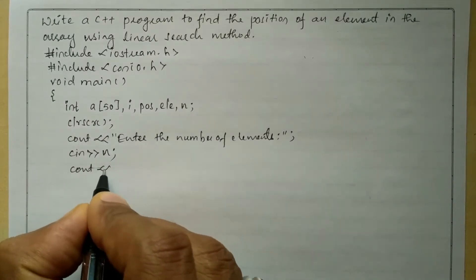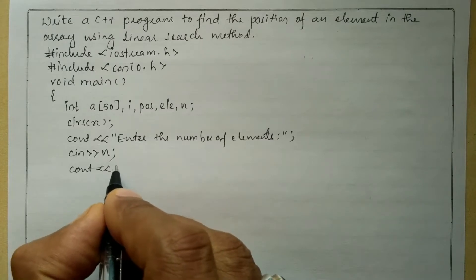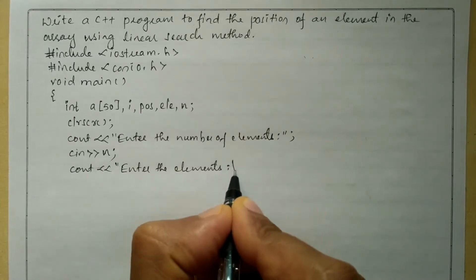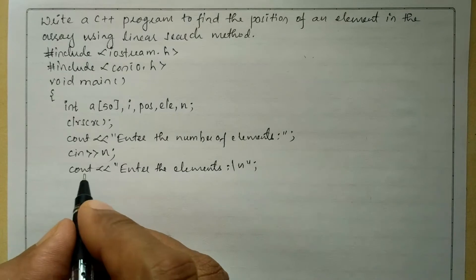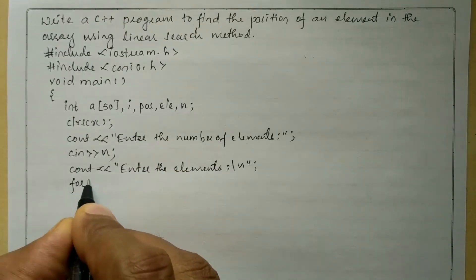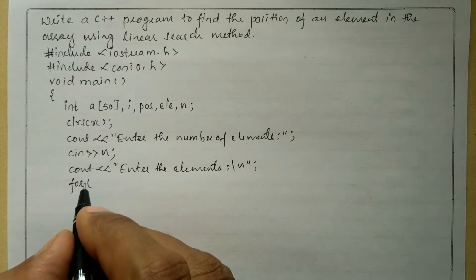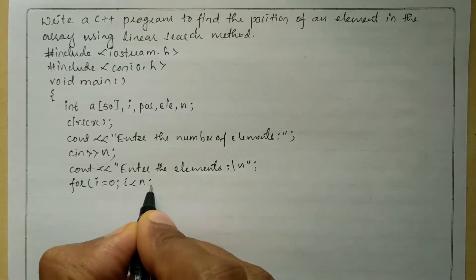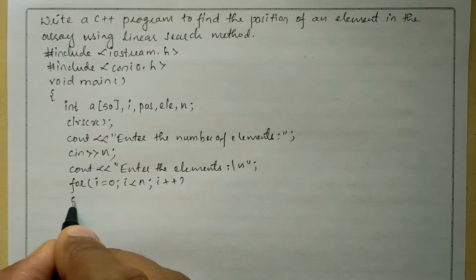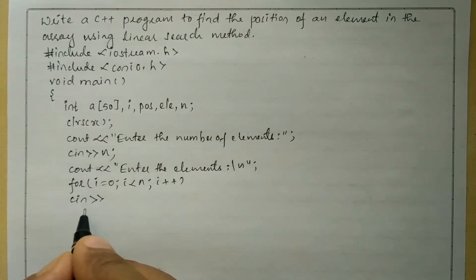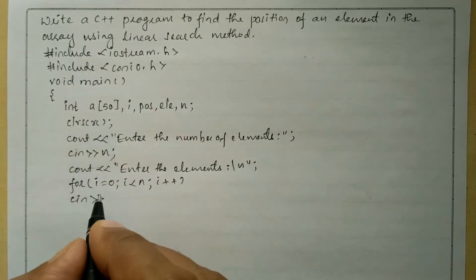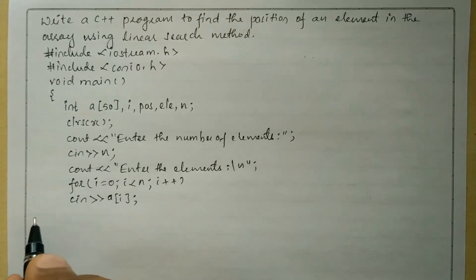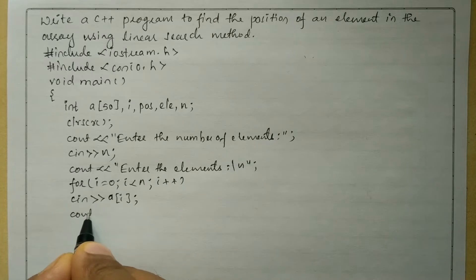Now we'll ask the user to enter the elements: cout with stream insertion operator and in double quotation marks 'Enter the elements', followed by backslash n and semicolon. Now using a for iterative statement we are going to insert each element one at a time. We write: for i equals zero, i less than n, i plus plus. We receive the response from the user via cin into array element a of index i.